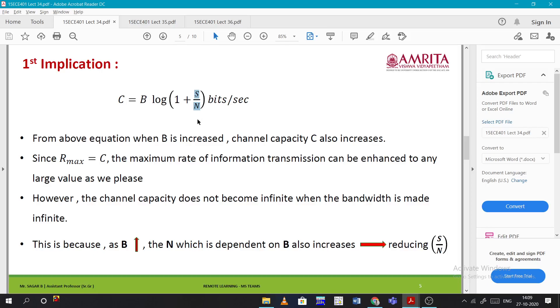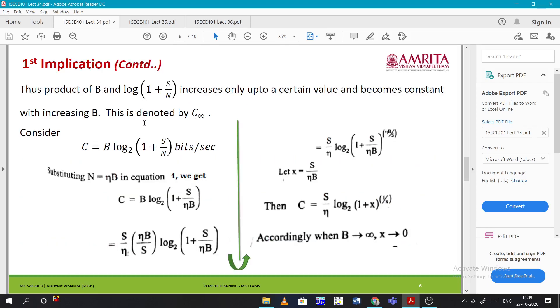To find the infinite capacity, we substitute N as η·B, then multiply and divide by S, and take log. We take this term to the numerator and it becomes log₂(1 + S/(η·B))^(ηB/S). We consider S/(η·B) as x.